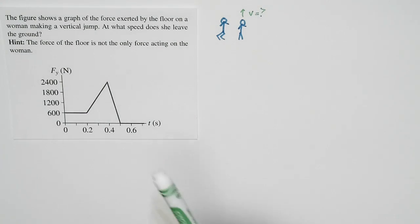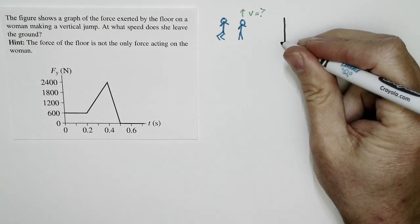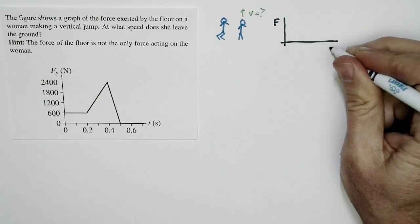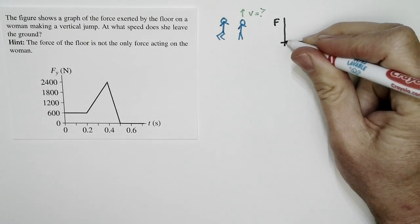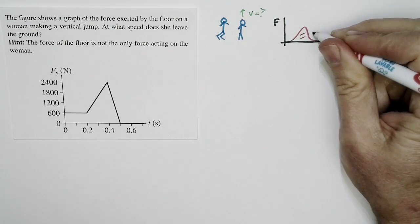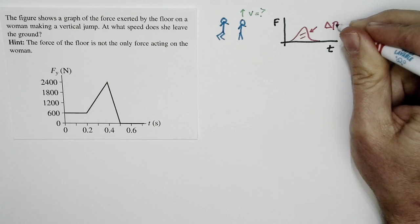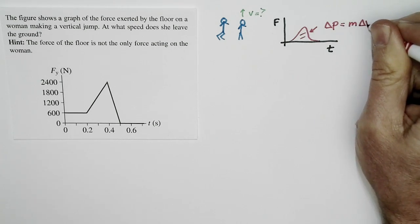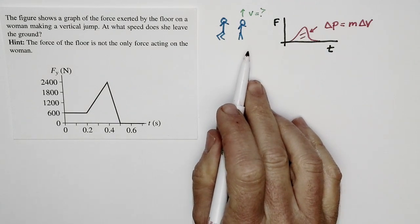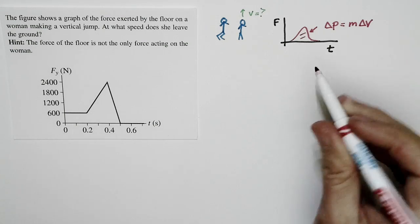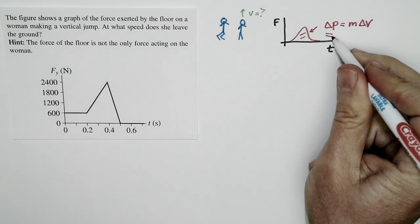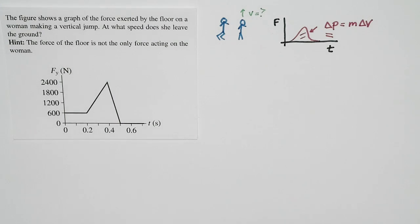We're told the force of the floor on her. If we know the net force that acts on her, we can treat this as basically an impulse problem. If we know the force versus time curve — and by the force I mean the net force — the area under this curve is just the impulse. That's equal to delta P. Delta P is M times delta V. Since she starts at rest and leaves the ground at some speed V, delta V is just equal to V. So we need to figure out the impulse on her — her change in momentum — by looking at the area under the force versus time curve.